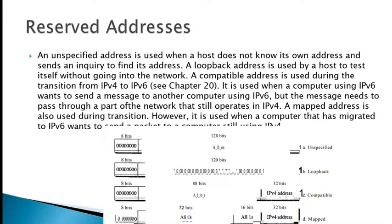The reserved addresses are another category in the address space. These addresses start with eight zeros — the type prefix is eight times zero. A few subcategories are defined in this category as shown in the figure. The unspecified address is used when a host does not know its own address and sends an inquiry to find one. A loopback address is used by a host to test itself without going into the network. A compatible address is used during the transition from IPv4 to IPv6, when a computer using IPv6 wants to send a message through a part of the network that still operates on IPv4. A mapped address is also used during transition, when a computer that has migrated to IPv6 wants to send a packet to a computer still using IPv4.